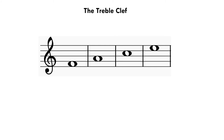This is what the notes look like when they are just in the spaces. The bottom note in the space is F, then it works its way up to A, then C, and then finally we've got E. An easy way to remember the order is that those letters spell out the word FACE from the bottom note. Now we can move on to the notes that are just on the lines.